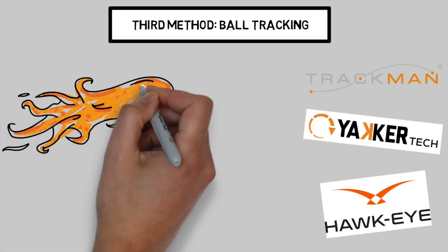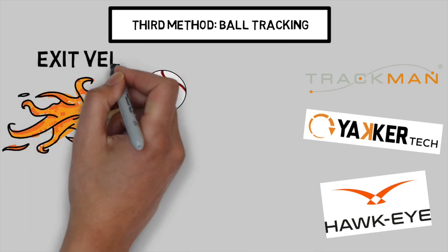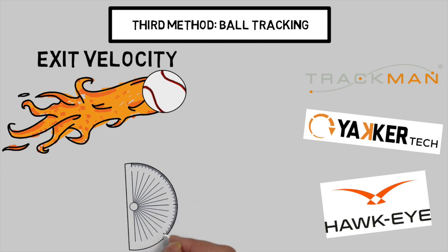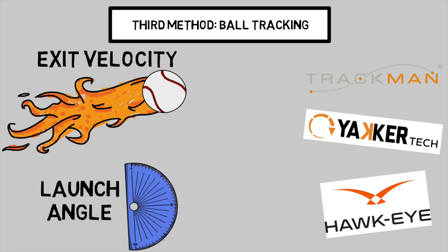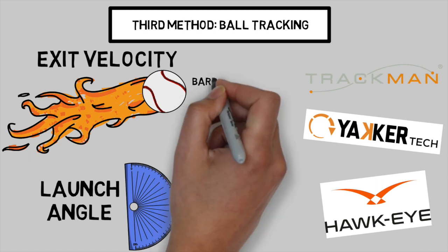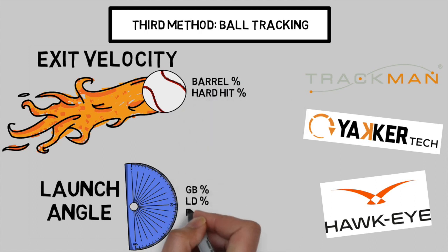Secondly, we have the data collected once that ball is put in play. The two most popular being exit velocity and launch angle. We've talked about these two points a lot, so I won't spend a ton of time on this idea. But utilizing exit velocity, you can analyze how frequently a player barrels the ball or hits them hard. And utilizing launch angle, you can see what kind of contact is being made — whether that is ground balls, line drives, or fly balls — and help that player adjust their approach based on the type of results they're getting.